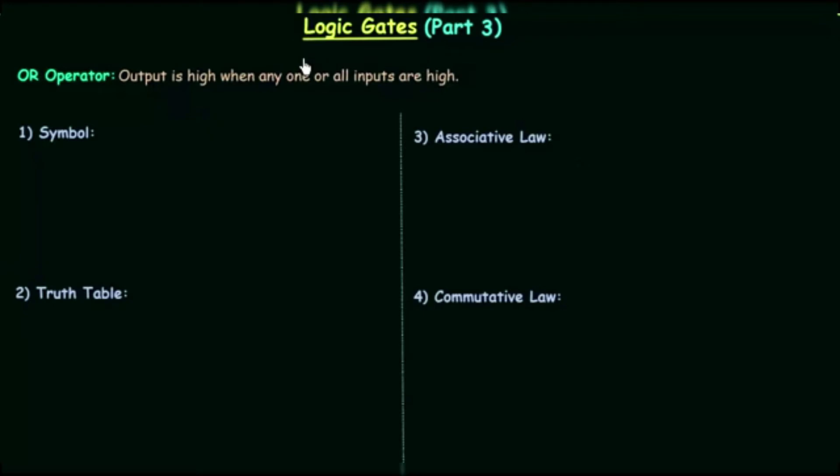Welcome to this part of logic gates. In this part we will discuss OR gate. First we will see what is OR operator. In OR operator, output is high when any one or all inputs are high. So if you want to make output high in OR operation, you have to make any one of your inputs high. We implement OR operation by using OR gate. In this lecture we will see different properties of OR gate.